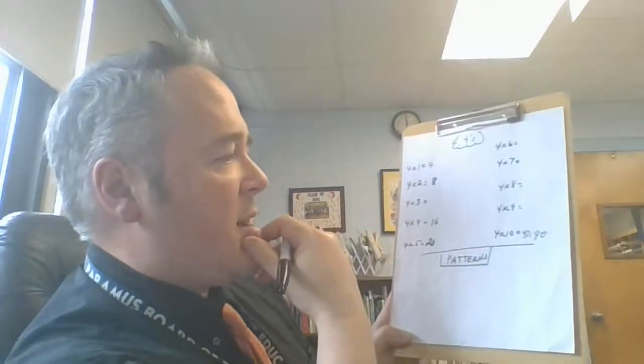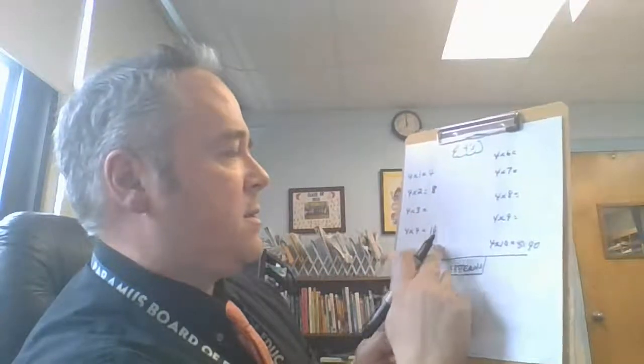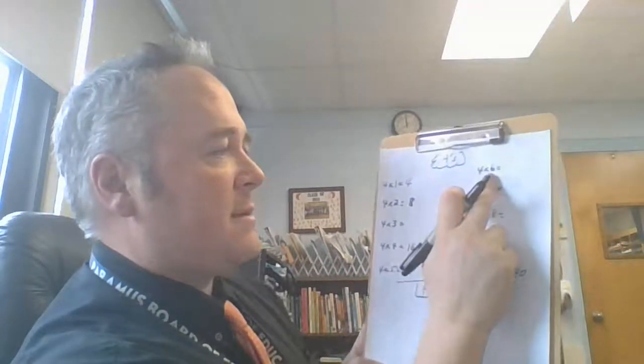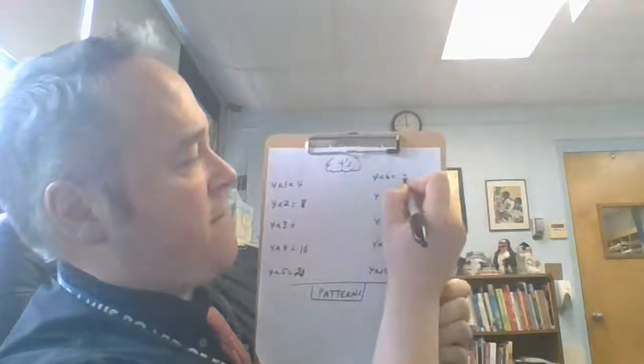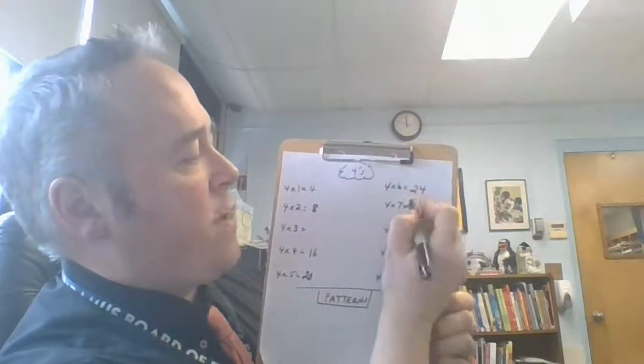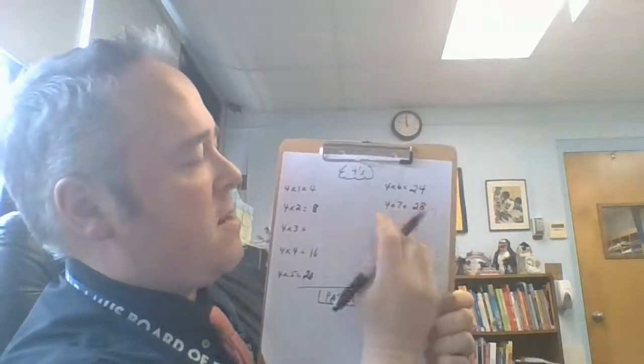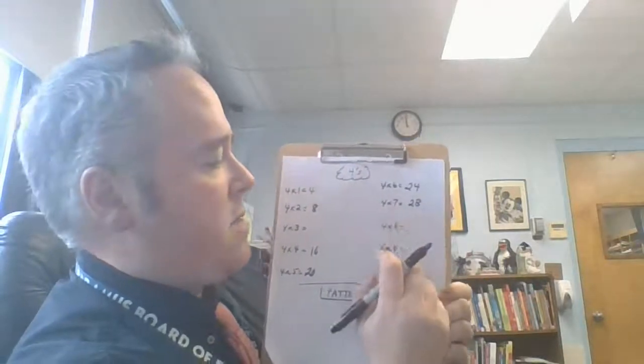What else? Now I want to think about the ones that take me just a second to think about. So I know four times six is, well, it's four more than this one. So that's going to be 24. And then I know I add four more to that and that's 28. Four times seven is 28.